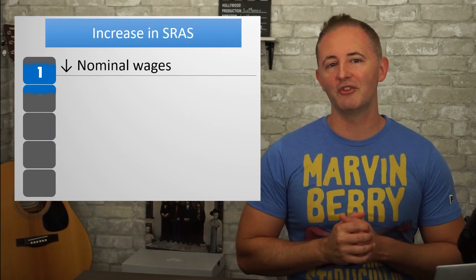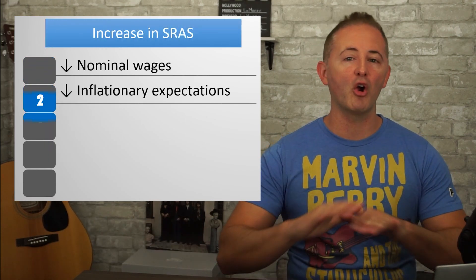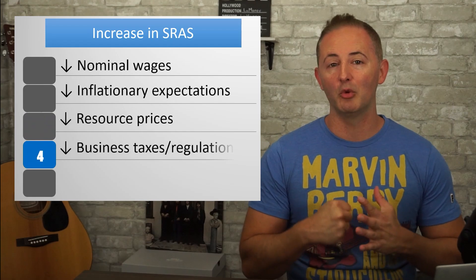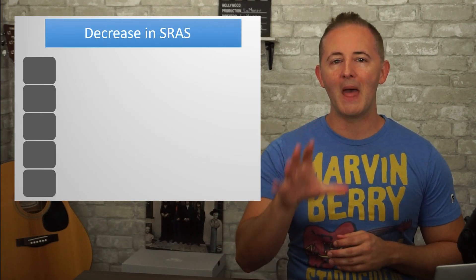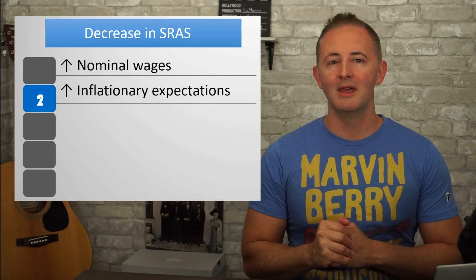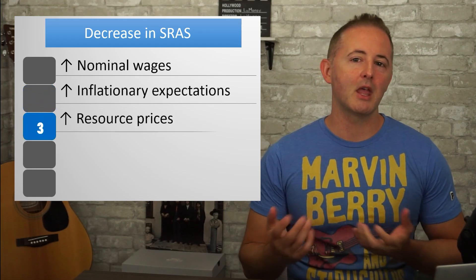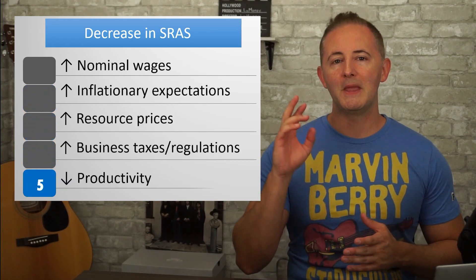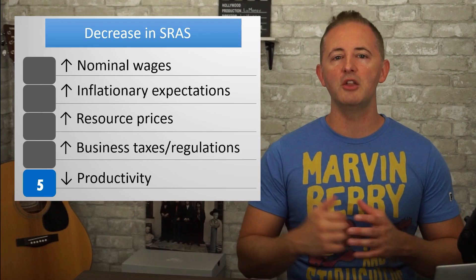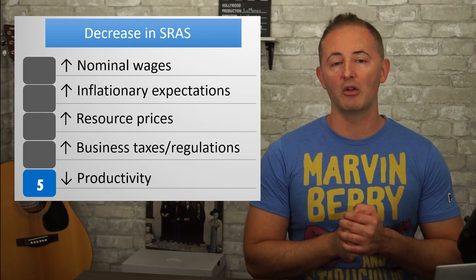So that's five different shifters, but far and away the most important ones are nominal wages and inflationary expectations — that's what I want you to focus on the most. The others might come up from time to time on multiple choice questions, but those two are the key to understanding this model, especially when we start discussing the transition from the short run to the long run. Guess what we're going to do in the next video?